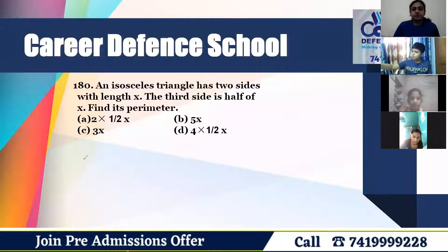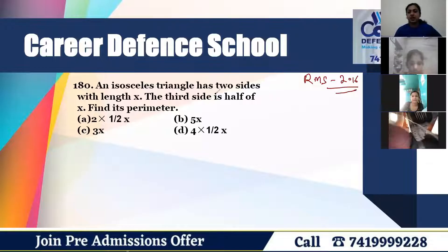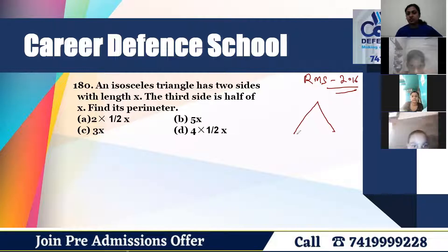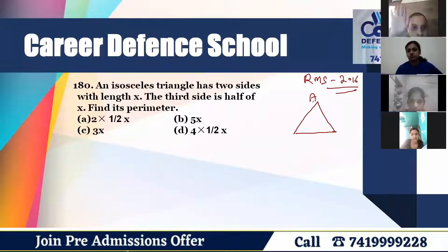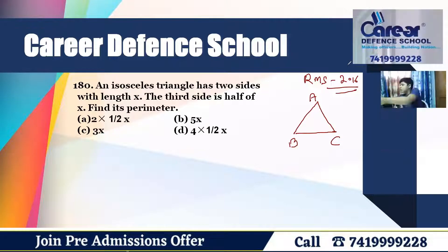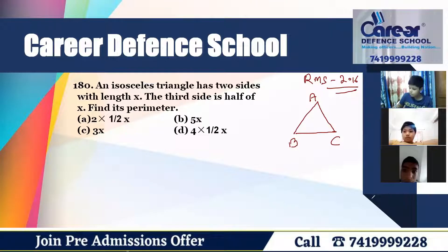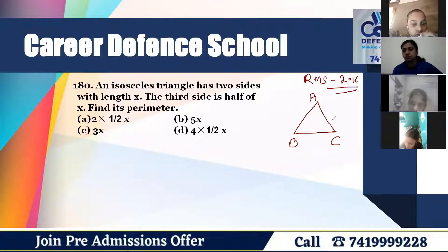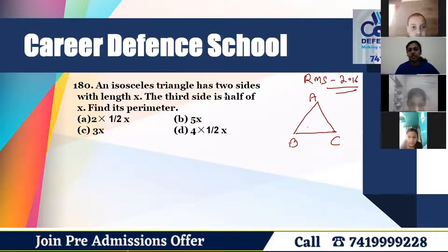Question number 180 of RMS 2016. The question is: an isosceles triangle has two sides with length X. An isosceles triangle means two sides are equal — two sides with length X.